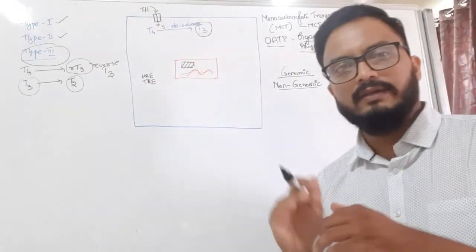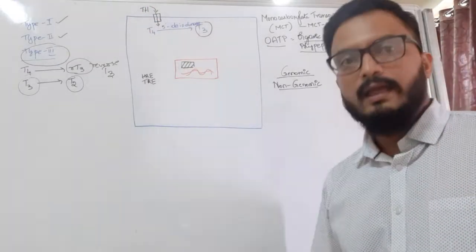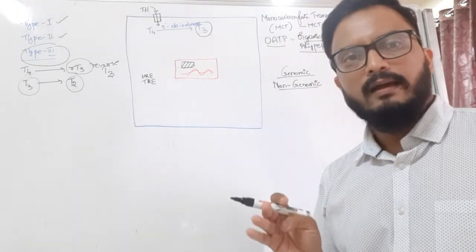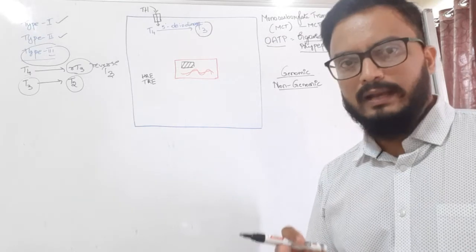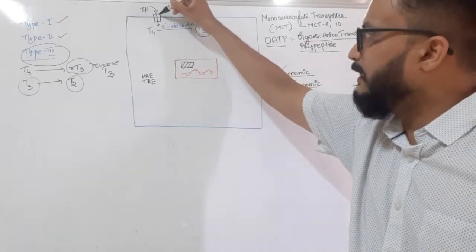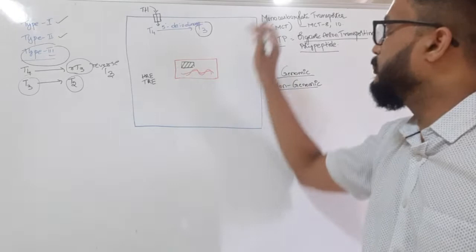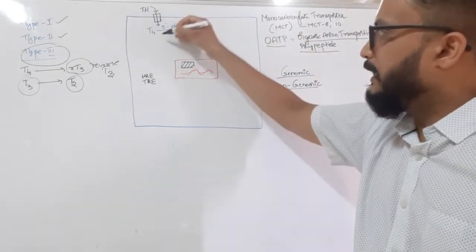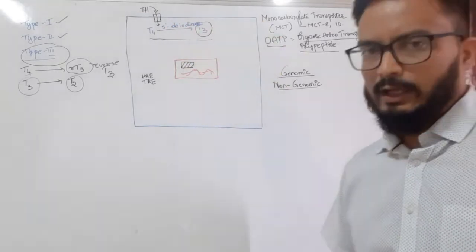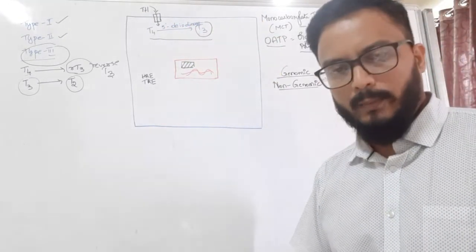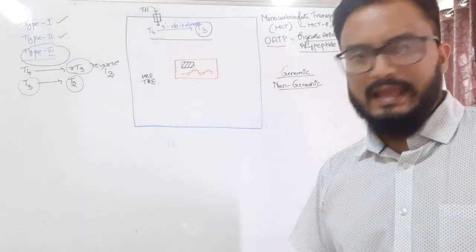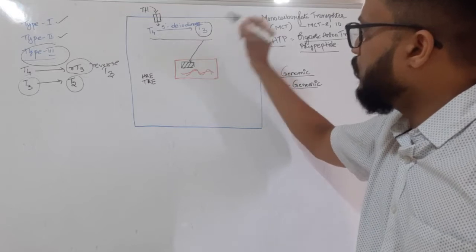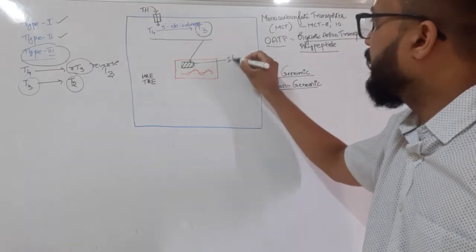Once released from the thyroid gland, the thyroid hormones bind to transporting proteins like thyroid binding globulin, prealbumin, albumin, or transthyretin, reach the cell, and pass inside through transporters like MCT and OATP. Inside the cell, T4 is converted into the active form T3 in the presence of type 1 or type 2 5' deiodinase, and T3 then attaches to the intranuclear receptor.